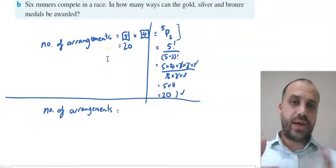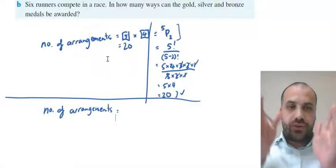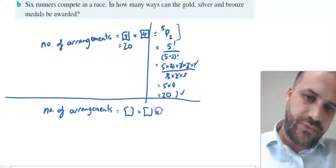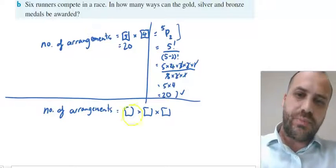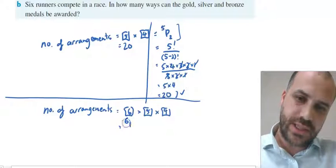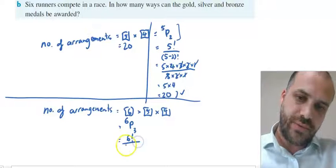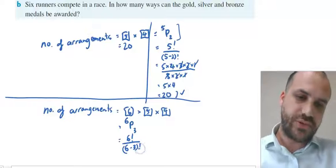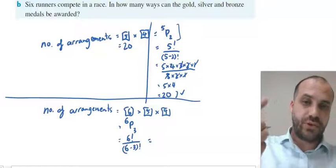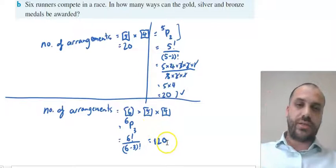Six runners compete in a race. In how many ways can the gold, silver, and bronze medals be awarded? We've got six people and a group of three to choose. Six people could get gold, five for silver, four for bronze. We can write this as 6P3, which equals six factorial over (six minus three) factorial, equal to six times five times four. You can type 6P3 into your calculator. Our answer is 120.